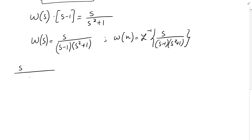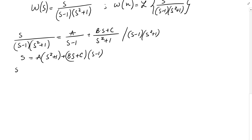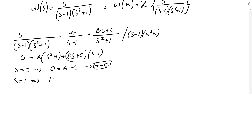To find w(n), we take the inverse Laplace transform of s over [(s minus 1)(s squared plus 1)] using partial fractions: A over (s minus 1) plus (Bs plus C) over (s squared plus 1). Multiplying both sides by (s minus 1)(s squared plus 1) gives: s equals A(s squared plus 1) plus (Bs plus C)(s minus 1). Setting s equals 0: 0 equals A minus C, so A equals C. Setting s equals 1: 1 equals 2A, so A equals one half, and therefore C equals one half.